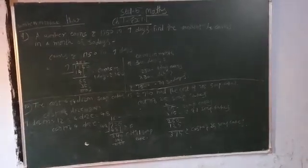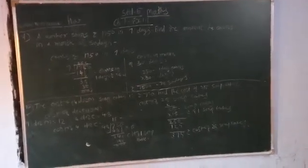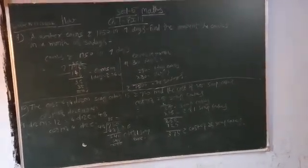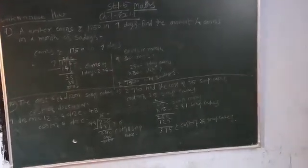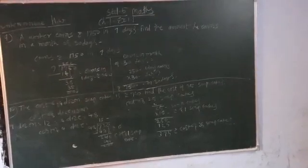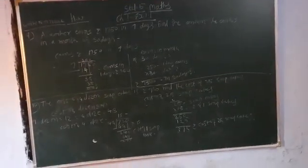Sum number 9: A worker earns Rupees 1,750 in 7 days. Find the amount he earns in a month of 30 days.